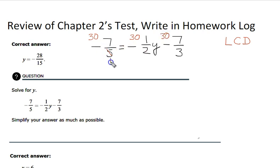5 will go into there once, 5 will go into there 6 times. 2 will go into there once, 2 will go into there 15 times. 3 will go into there once, 3 will go into there 10 times. Now all our denominators are 1, we just write our new fraction. It's negative 6 times 7 is negative 42, negative 15y here, and here we have negative 10 times 7, negative 70.